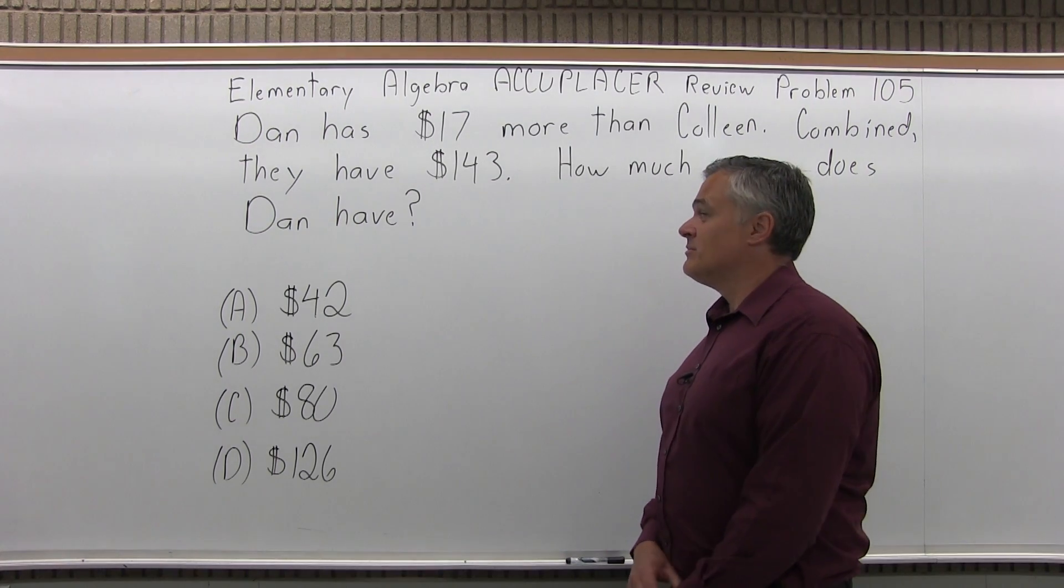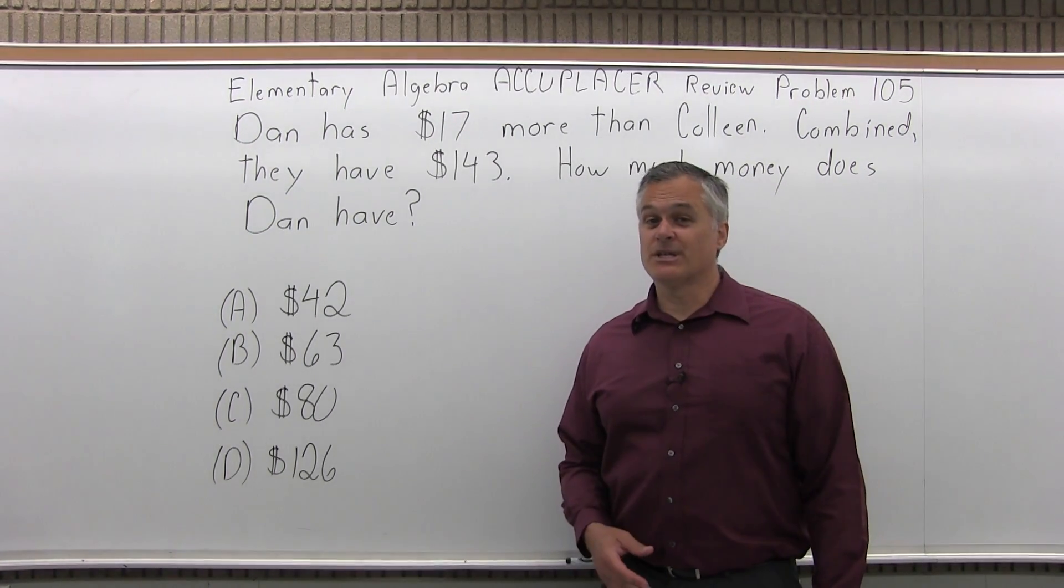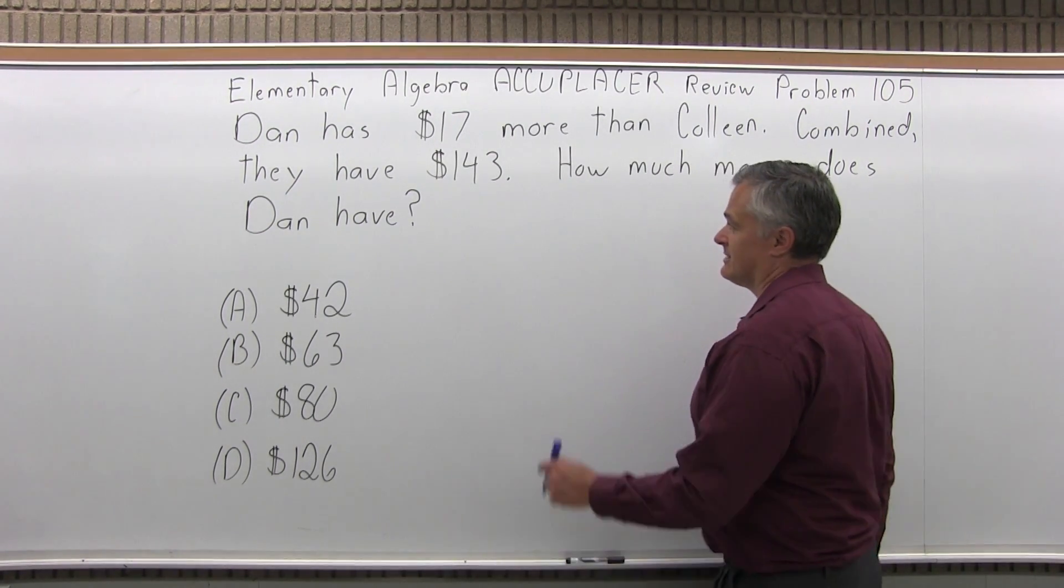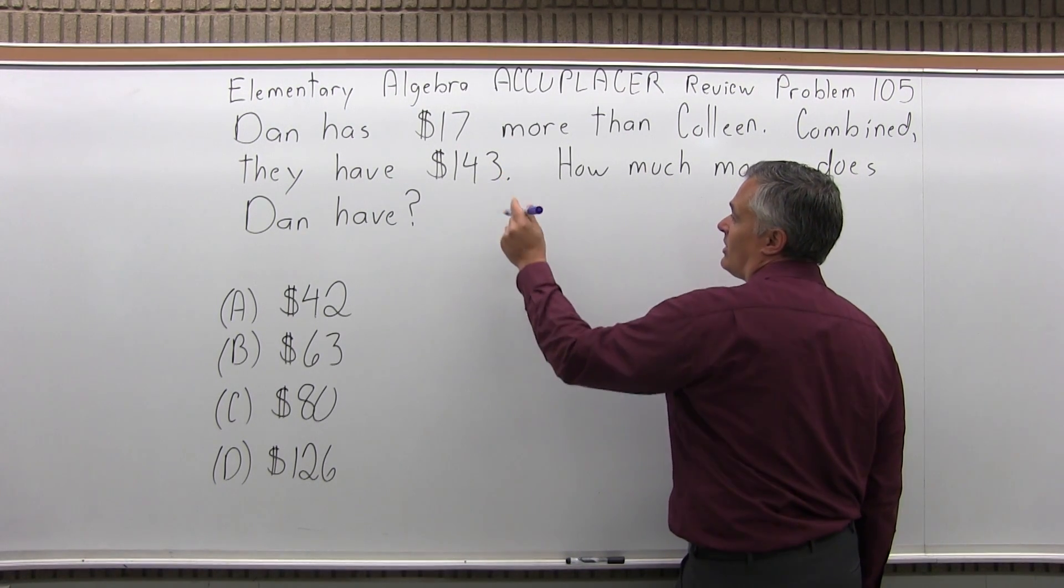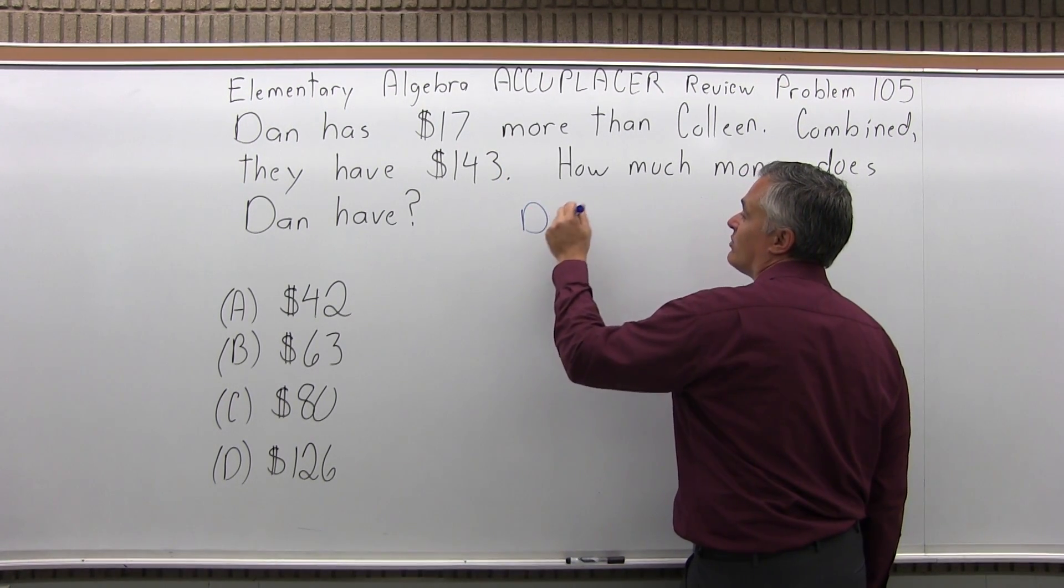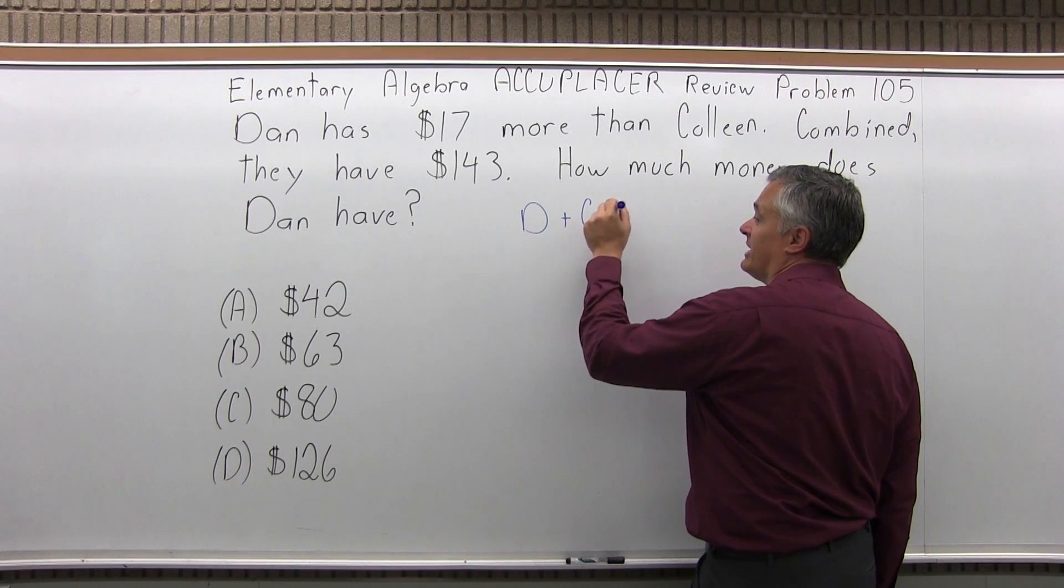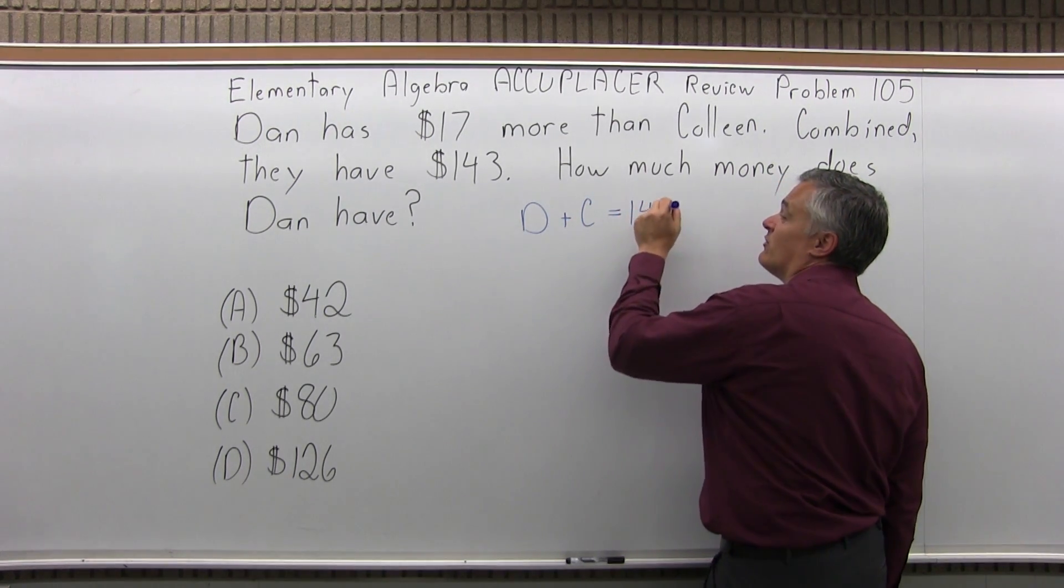Well, you could do trial and error and eventually get it, but that's too tedious. So basically, combined, Dan and Colleen have $143. So let's say Dan plus Colleen adds up to $143.